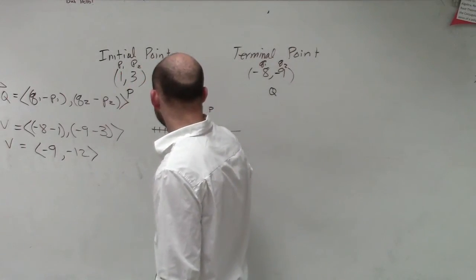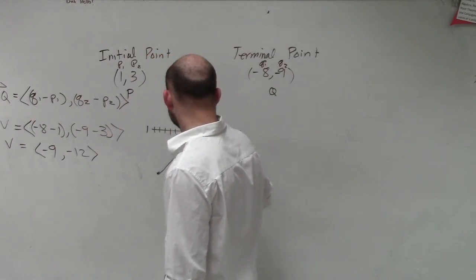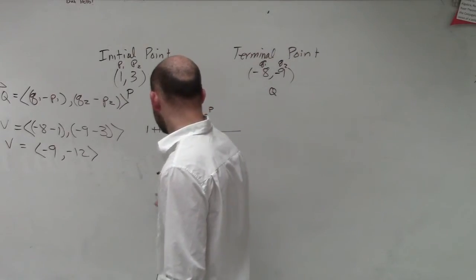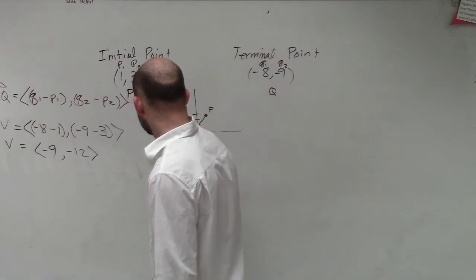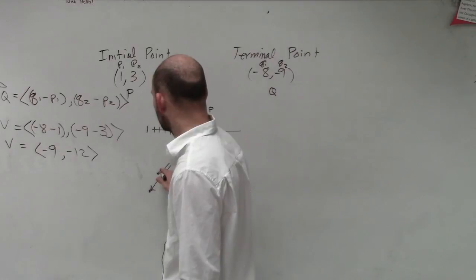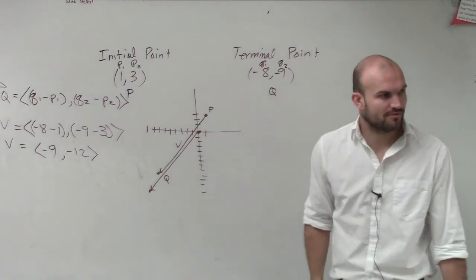So I'll call that vector V, and the component form is now going to be negative 9, negative 12. Okay? So now what you guys can see is now I've rewritten this vector in component form.